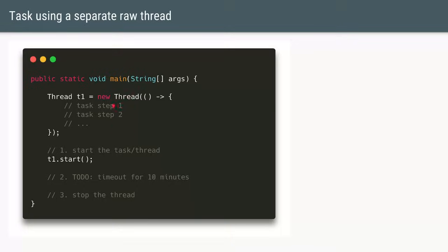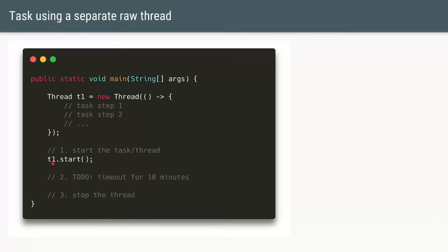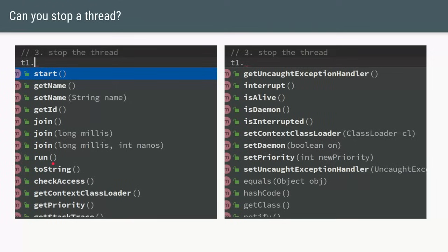Let's say we create a new thread in our main method. We are going to create a new thread, submit a runnable to it — and in that runnable will have all the steps in the task — and then we are going to start that thread. Once we start the thread we want to wait for 10 minutes and then stop it. To stop the thread, all we have is the handle t1. If we look for any APIs in the Thread class that will help us stop it, the short answer is no — we do not have a stop method in the Thread class.